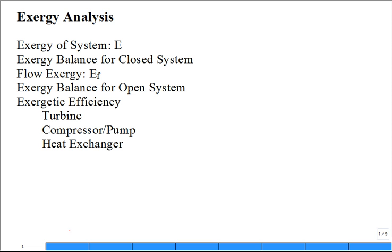Let's jump into chapter seven. It deals with exergy analysis. We're going to learn that there's a new property called exergy, and it's for a system. What other properties do we already know of? Enthalpy is one. Entropy. Internal energy. Specific volume. The easiest ones you missed: pressure and temperature. So usually it's pressure, temperature, then you move to the harder ones. But now we have a new property for a system - it's called exergy.